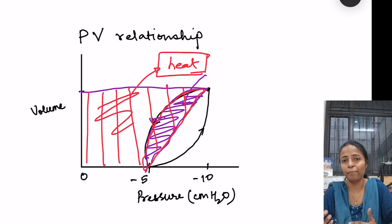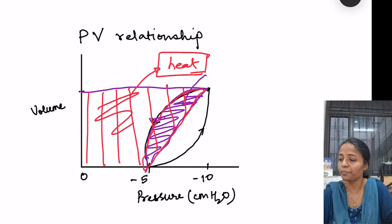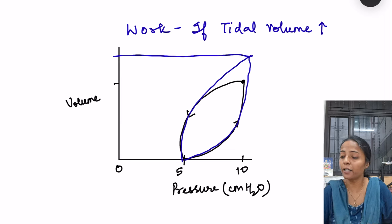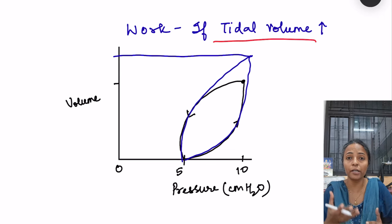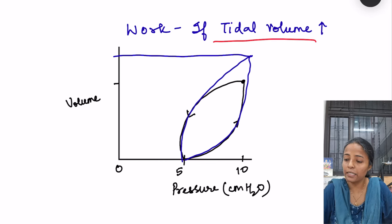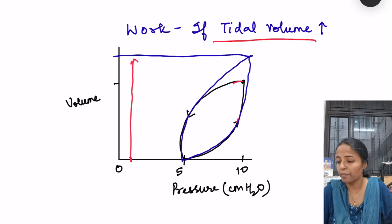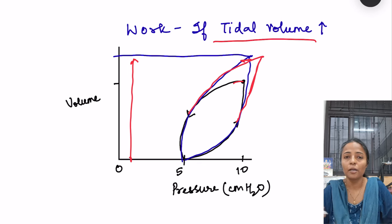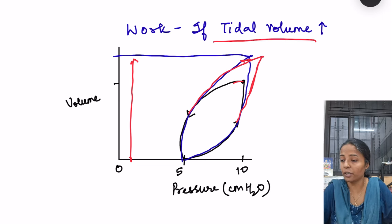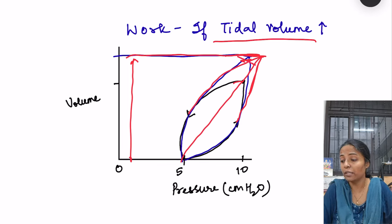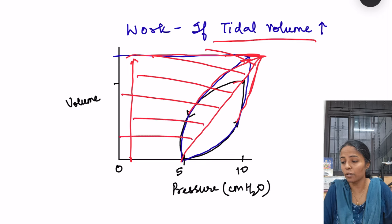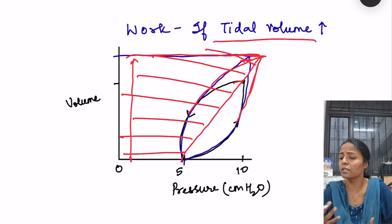Moving on to what happens if there is a change in respiratory rate or depth of breathing. If tidal volume increases — meaning you take deep breaths — there is an increase in volume and somewhat an increase in pressure, because for movement of more air we need more pressure gradient. You can see that only the elastic work component is increasing; for viscous resistance and airway resistance it is not increasing much — only the compliance work increases.